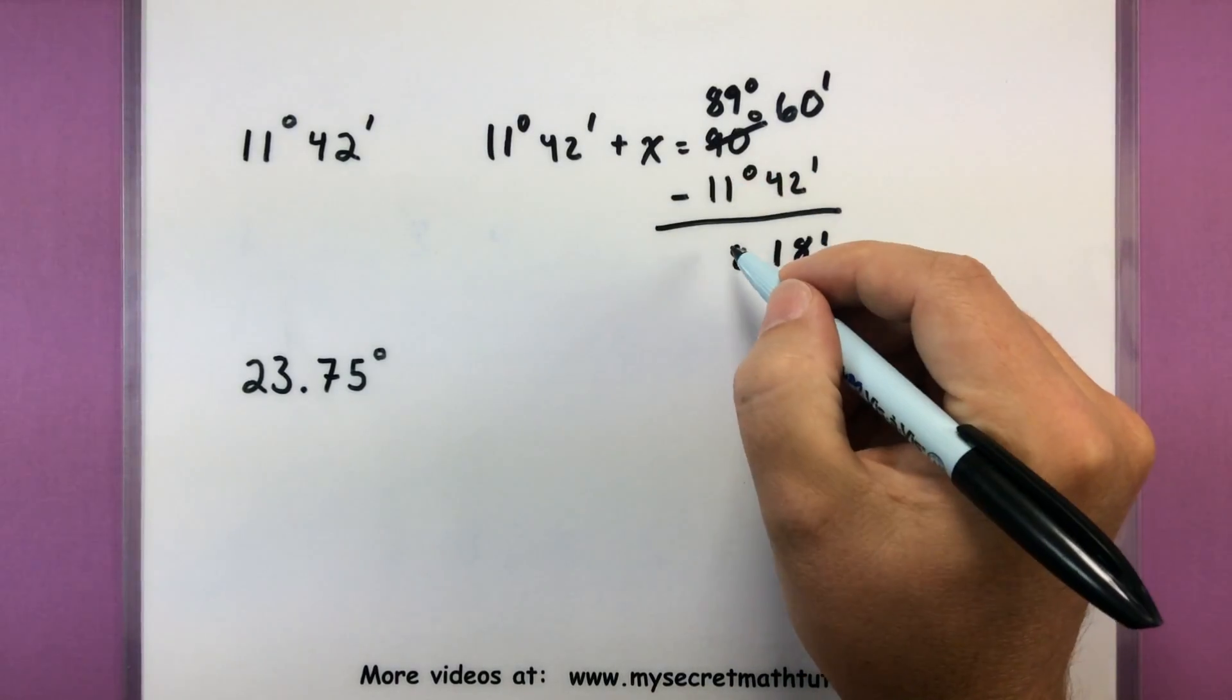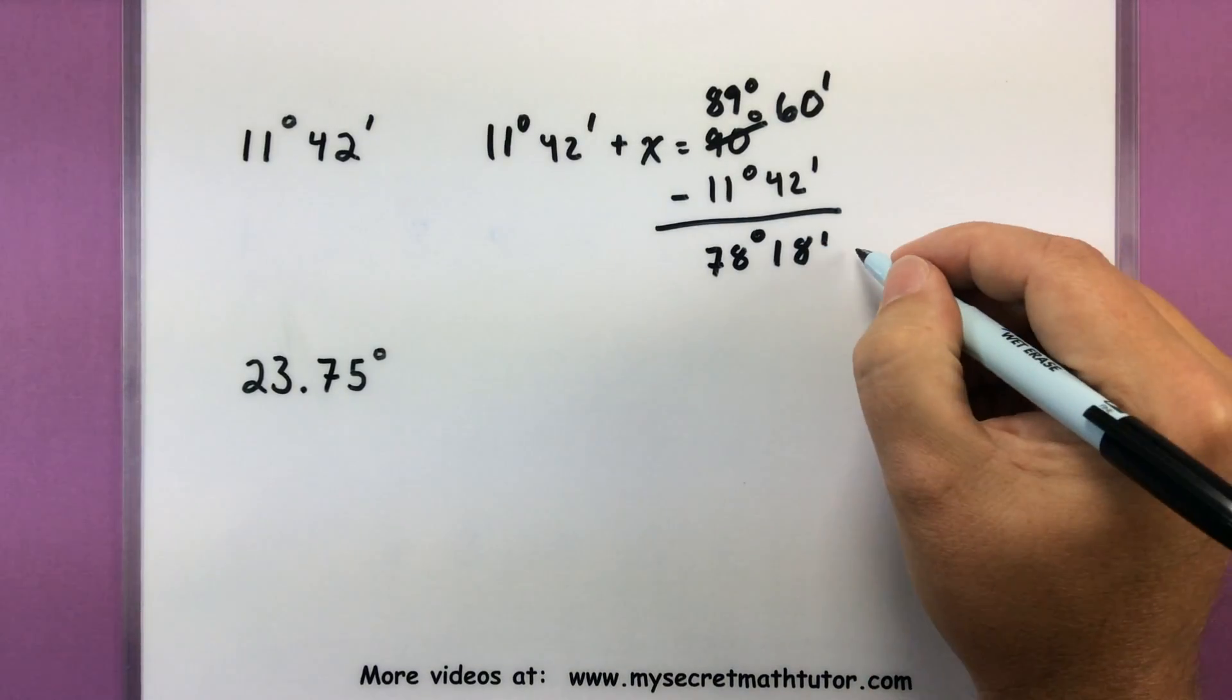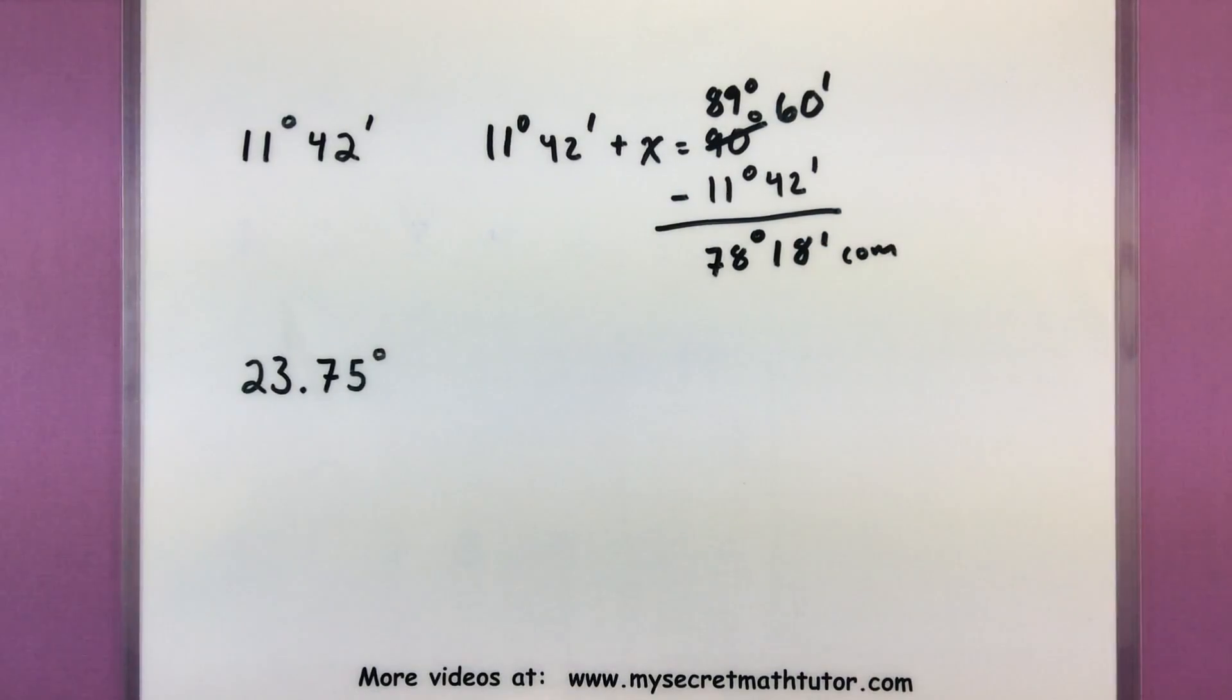And now I have 89 minus 11, there's 8, 8 minus 1 is 7. So my complement in this case is going to be the angle that's 78 degrees, 18 minutes. Not very difficult.